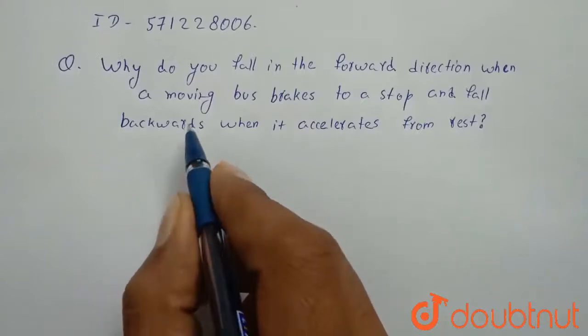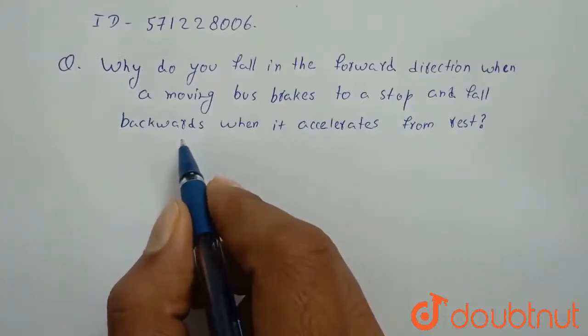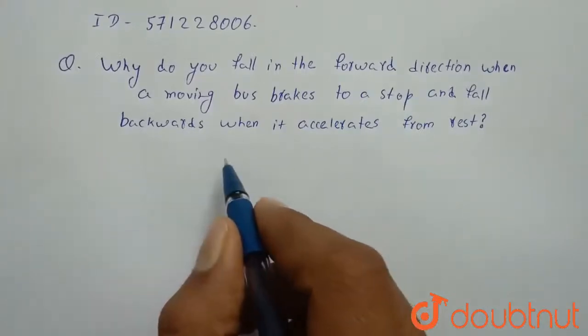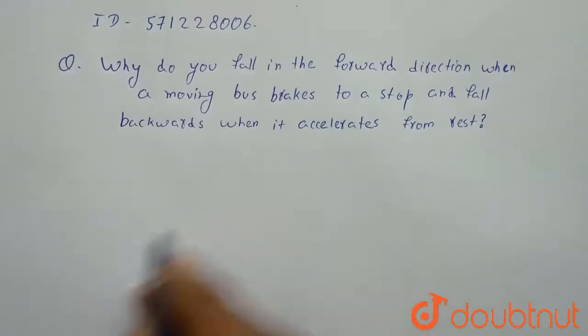Why do you fall in the forward direction when a moving bus brakes to a stop and fall backward when it accelerates from rest?